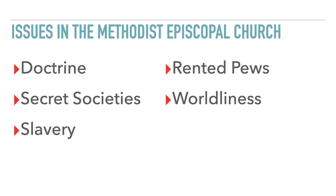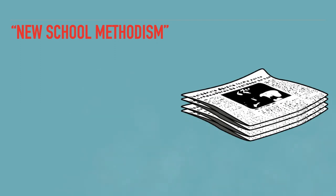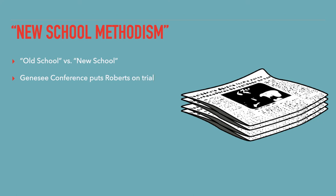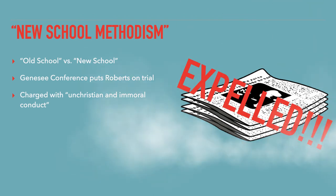In response to these weighty matters, B.T. Roberts penned a treatise titled New School Methodism, in which he argued that Methodism had split into an old school and new school, warning that if the new school were to generally prevail, then the glory would depart from Methodism. The article was brought to the attention of conference leadership, who put Roberts on trial, convicted him, and reproved him. After the article was published again without his consent, Roberts was charged with unchristian and immoral conduct, and as a result, was declared expelled from the Genesee Conference of the Methodist Episcopal Church.